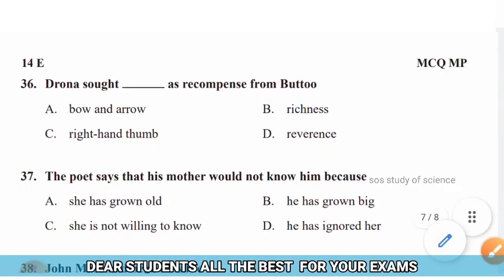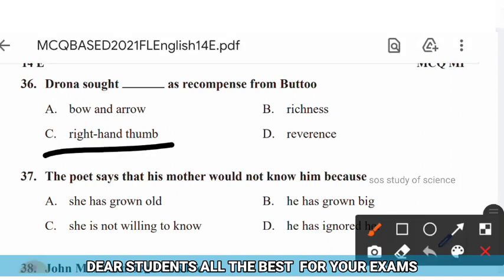Question 36: Drona sought dash recompense from Batu. Options: bow and arrow, richness, right hand thumb, reverence. The right answer is option C — Drona sought the right hand thumb as recompense from Batu.